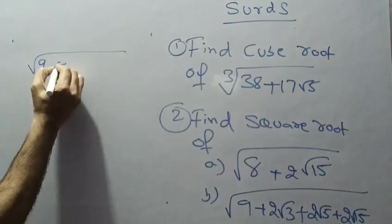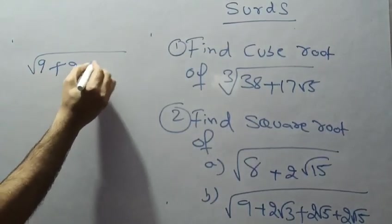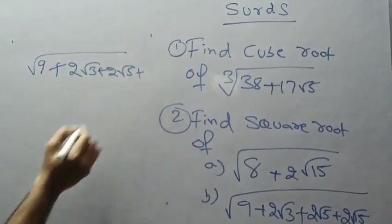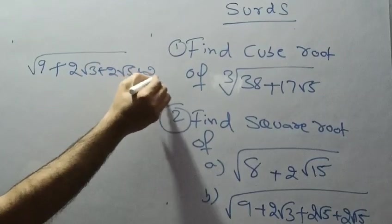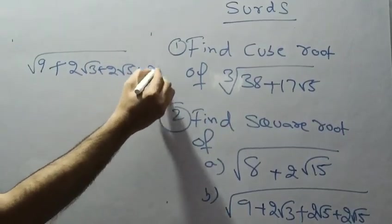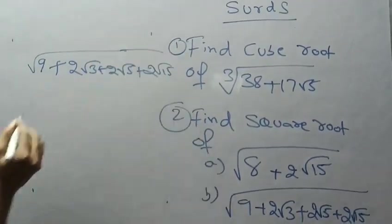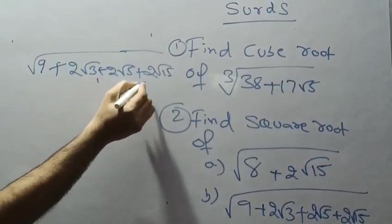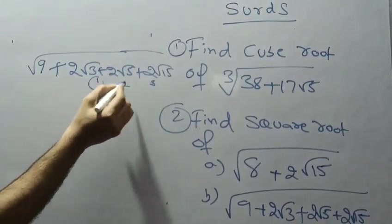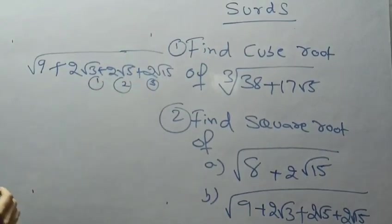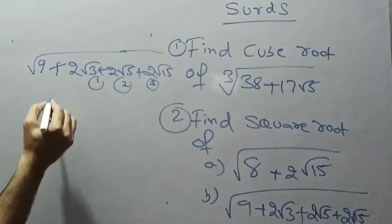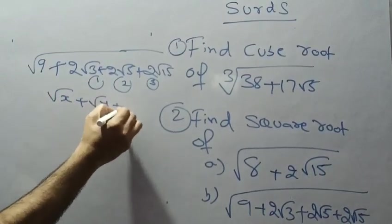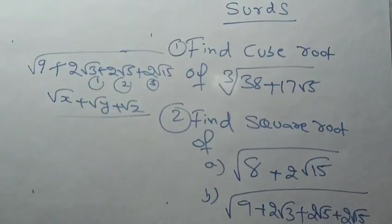The next problem is: square root of (5 + 2√5 + 2√15 + 2√3). Here we label the three values as 1, 2, and 3 using x, y, z notation. The answer will be of the form √x + √y + √z, and we need to find the values of x, y, and z.